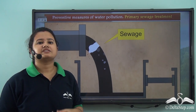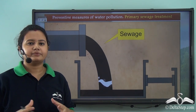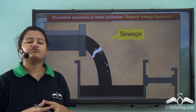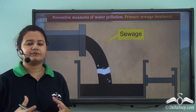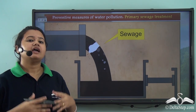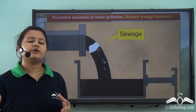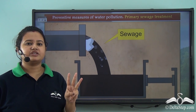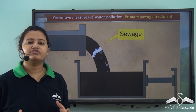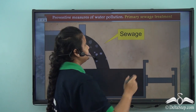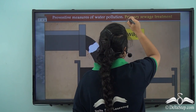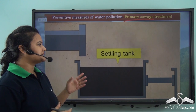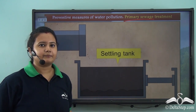Sewage is a major source of water pollution, and it must be treated before we release it into water bodies. Sewage treatment includes three processes or stages. The first stage is known as primary treatment.